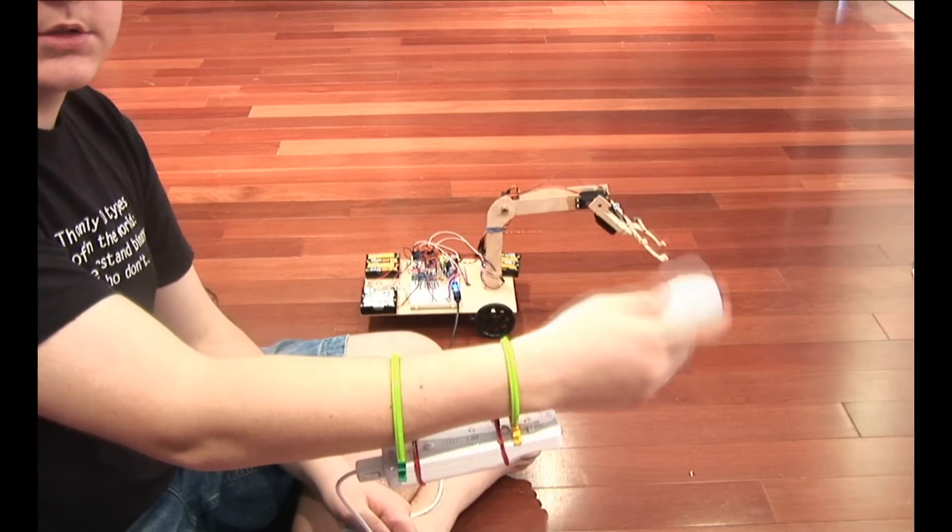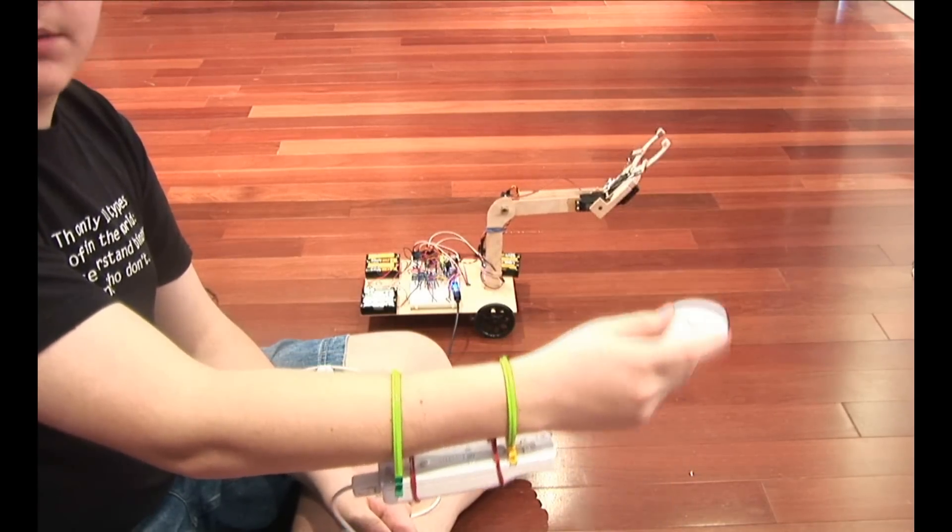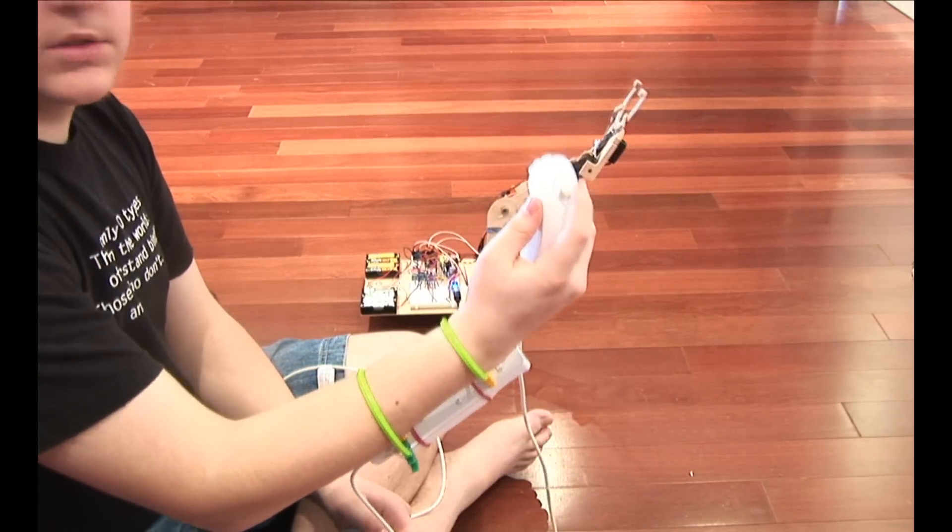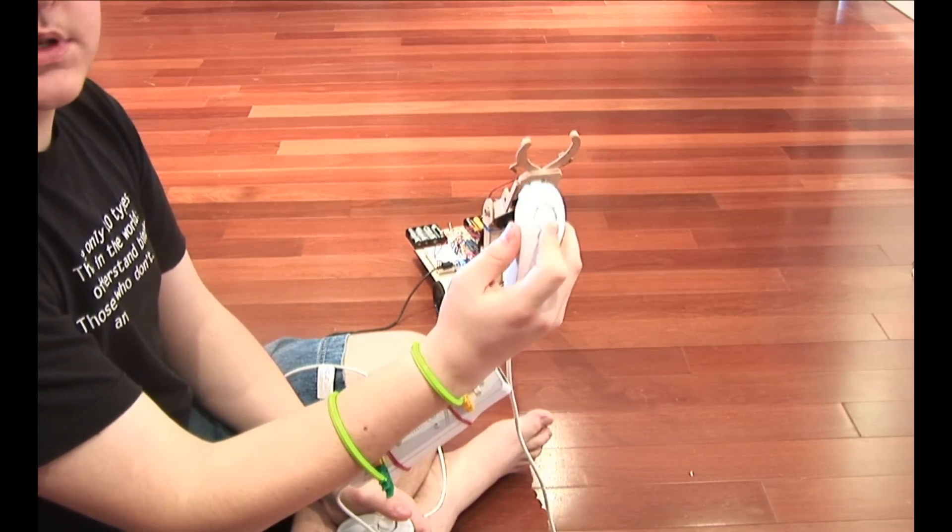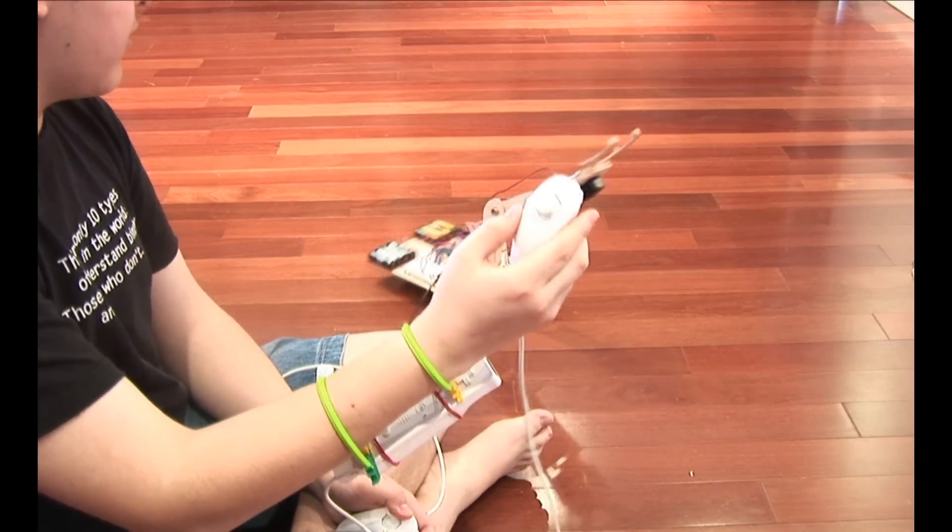As you see, if I tilt the nunchuck, the claw goes up and down. If I use the joystick of the nunchuck, it opens and closes the claw of the robot.